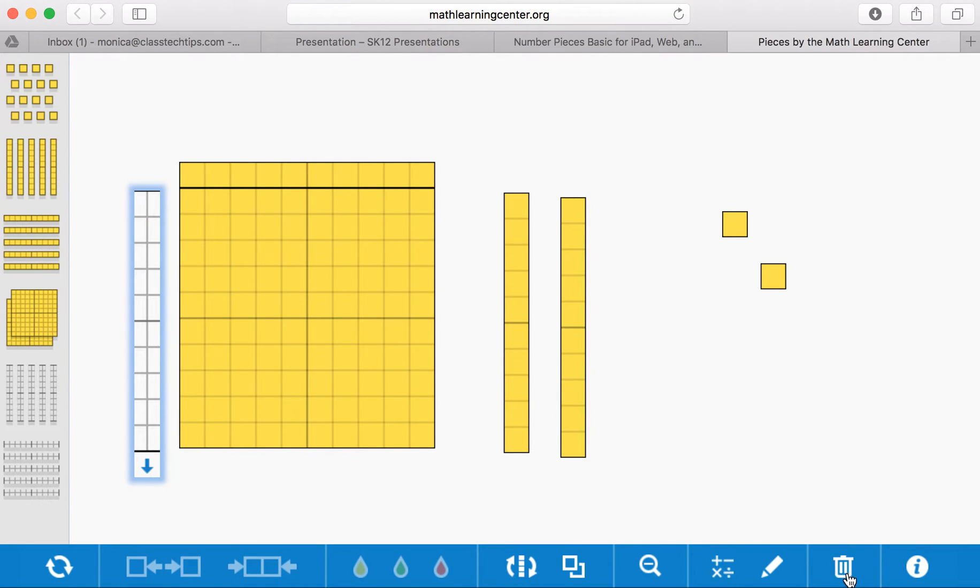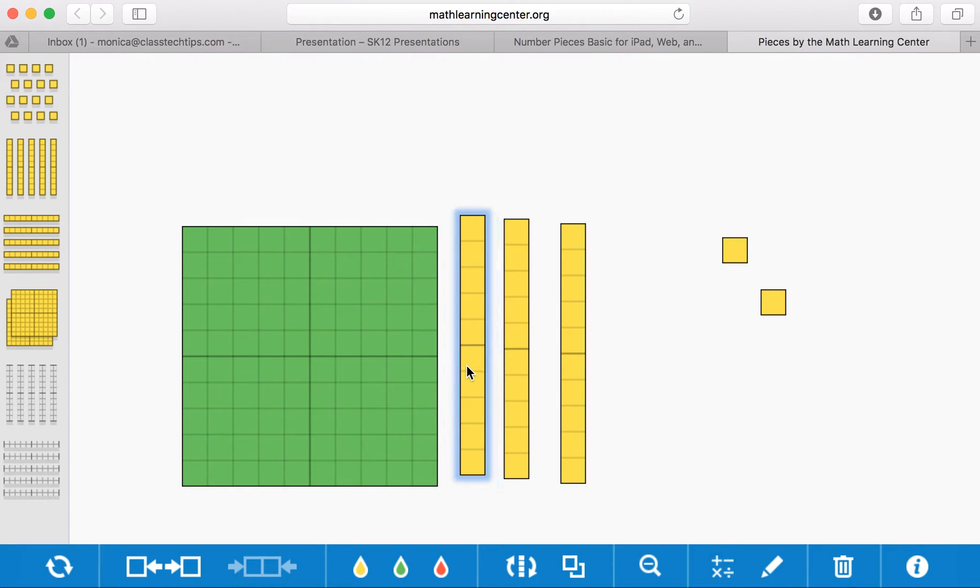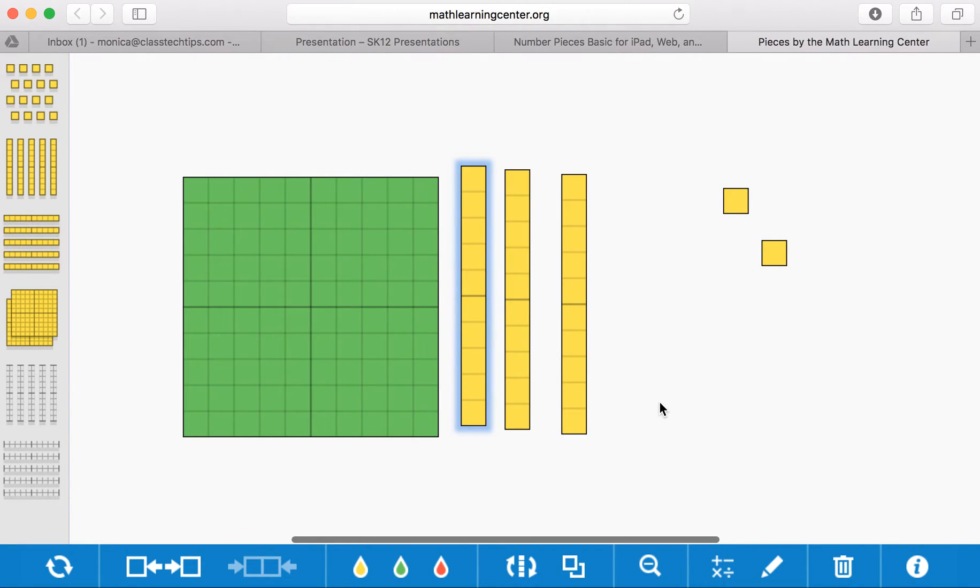Since I've highlighted this, I'm going to go ahead and press the trash can and it will go away. I can tap down here as well if I'm holding onto one of these and want to change the color for some reason. I can also highlight and switch the orientation if I want it to line up with the other ones I have on the screen as well.